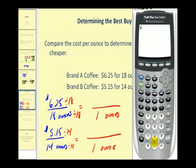So we have $6.25 divided by 18, and then we also have $5.15 divided by 14. So you can see that brand A is almost 35 cents per ounce, while brand B is almost 37 cents per ounce.